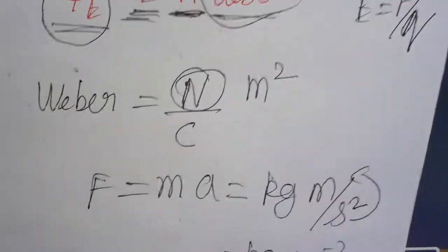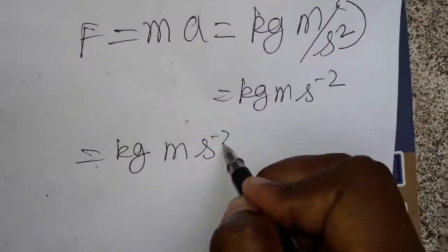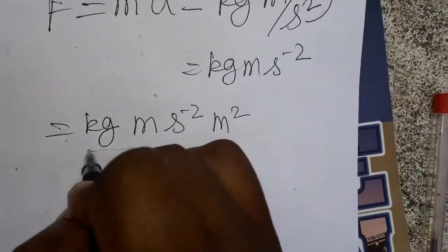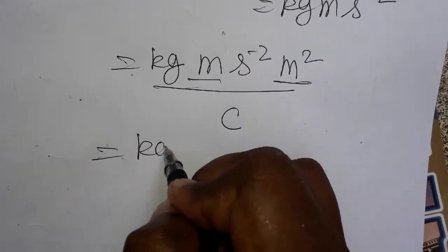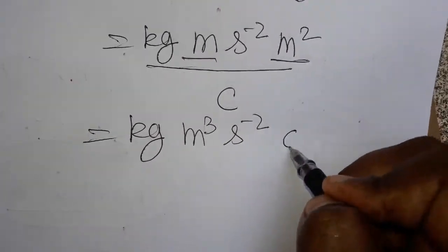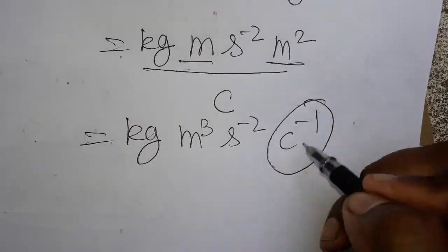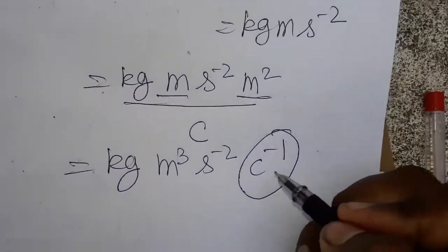So we know what is newton now. It's kg meter second minus 2 meter square divided by coulombs. Meter meter we can take as meter cube, so meter cube second minus 2 coulombs inverse.